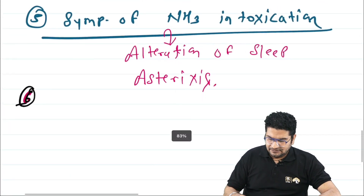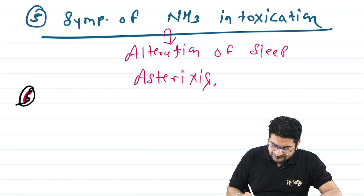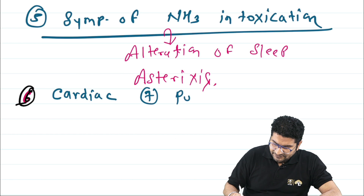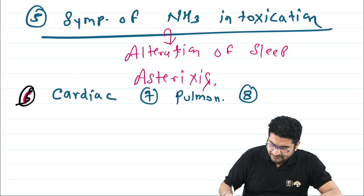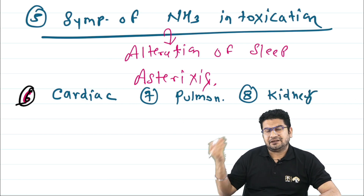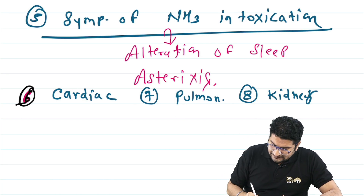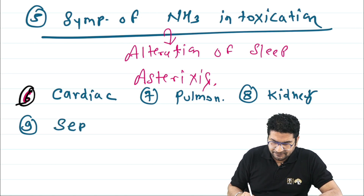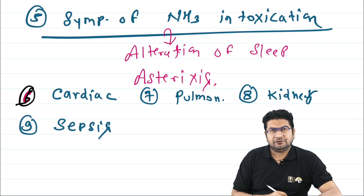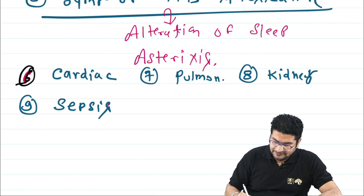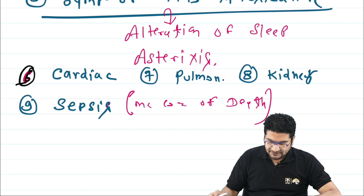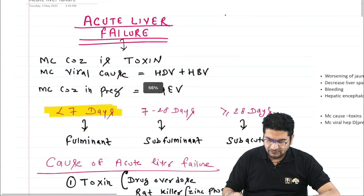The patient can develop multi-organ damage: cardiac manifestations such as arrhythmias, pulmonary manifestations with shortness of breath, and kidney involvement with increased creatinine and blood urea nitrogen. There can also be electrolyte imbalance due to kidney involvement. The patient can develop sepsis, especially initiated after pulmonary infection — and sepsis is the most common cause of death.